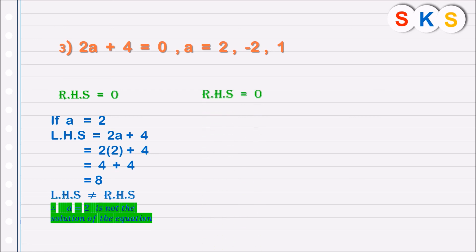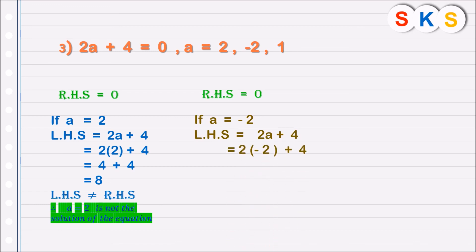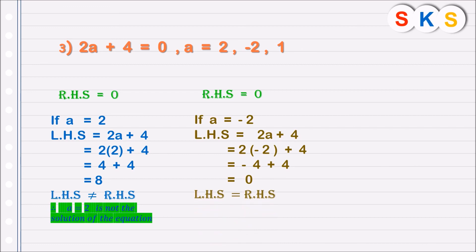For a equals to minus 2, we substitute into the left hand side, 2a plus 4. Replacing a by minus 2, we get 2 into minus 2 plus 4, which is minus 4 plus 4, that is 0. The left hand side equals the right hand side, both are 0. Hence, a equals to minus 2 is the solution of that equation.